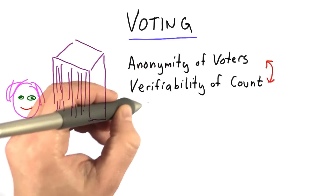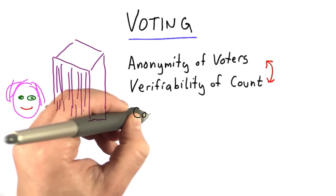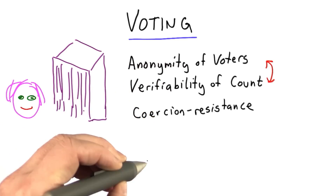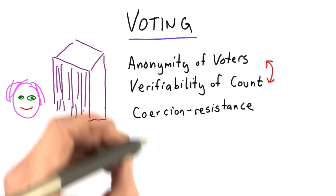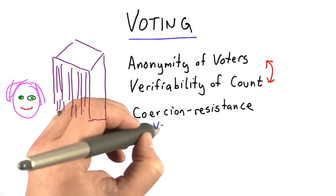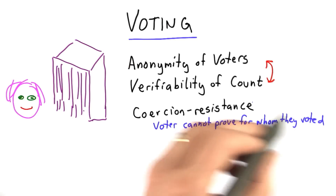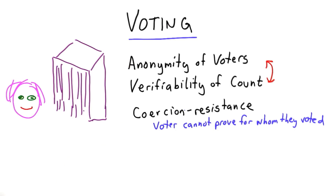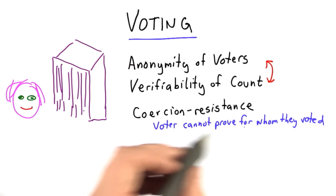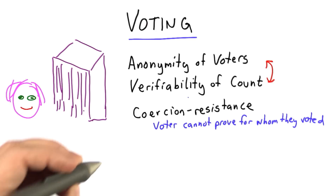Another property some voting systems want to provide is coercion resistance. What this really means is that a voter can't prove who they voted for. If votes are secret and there's no way to prove for whom one votes, well then there's no way to coerce a voter into voting a particular way.